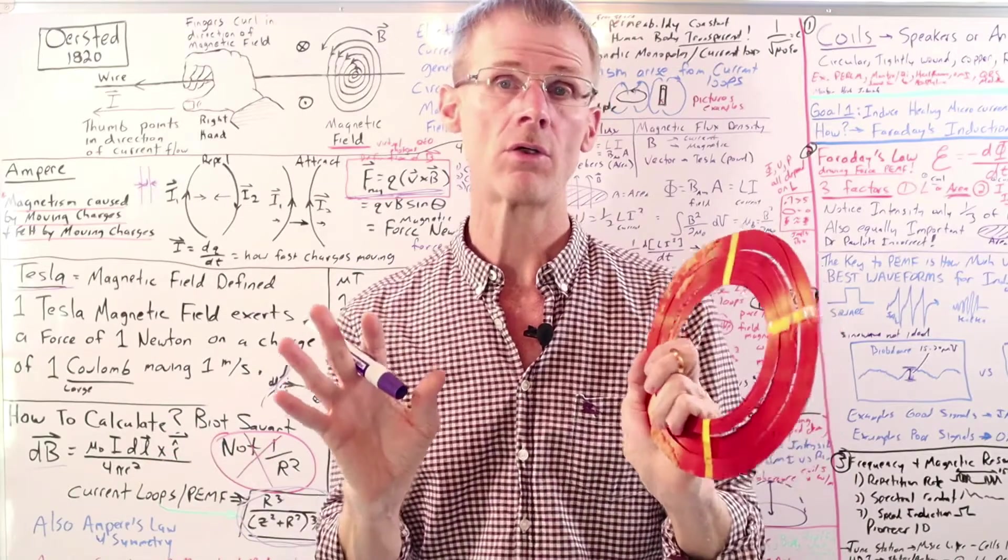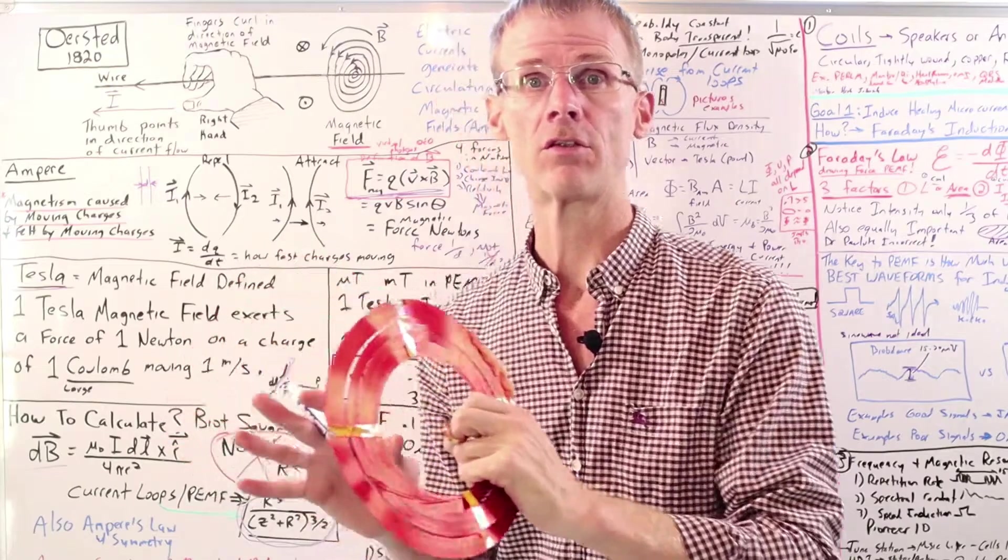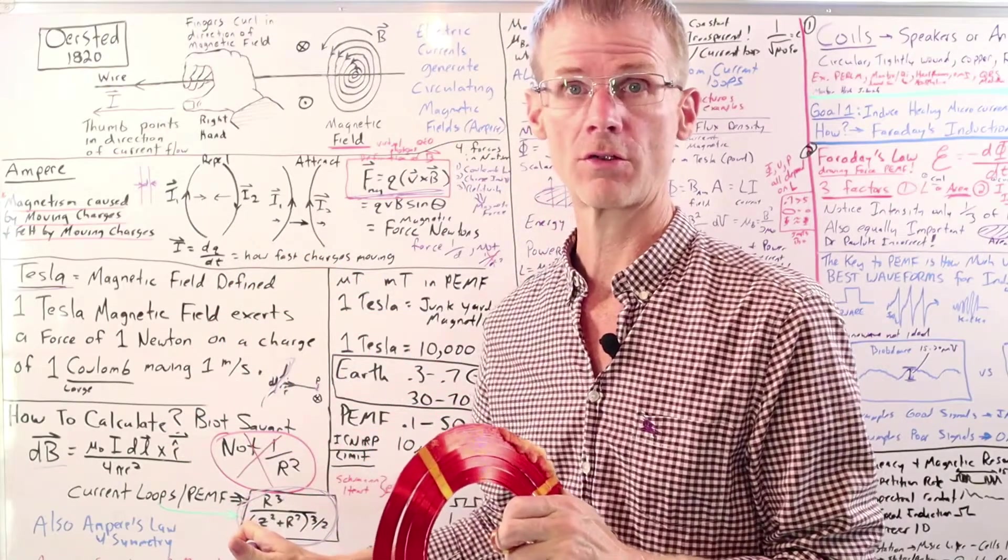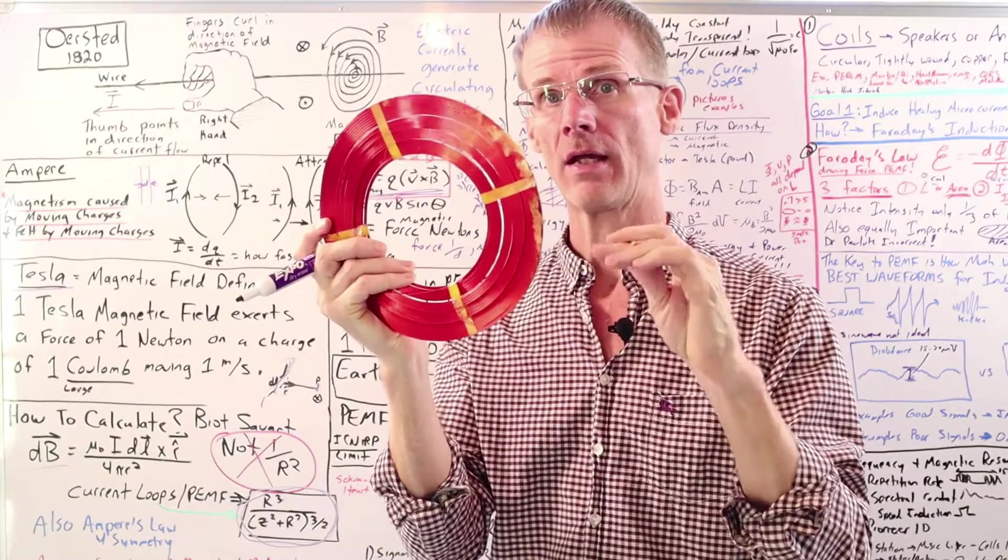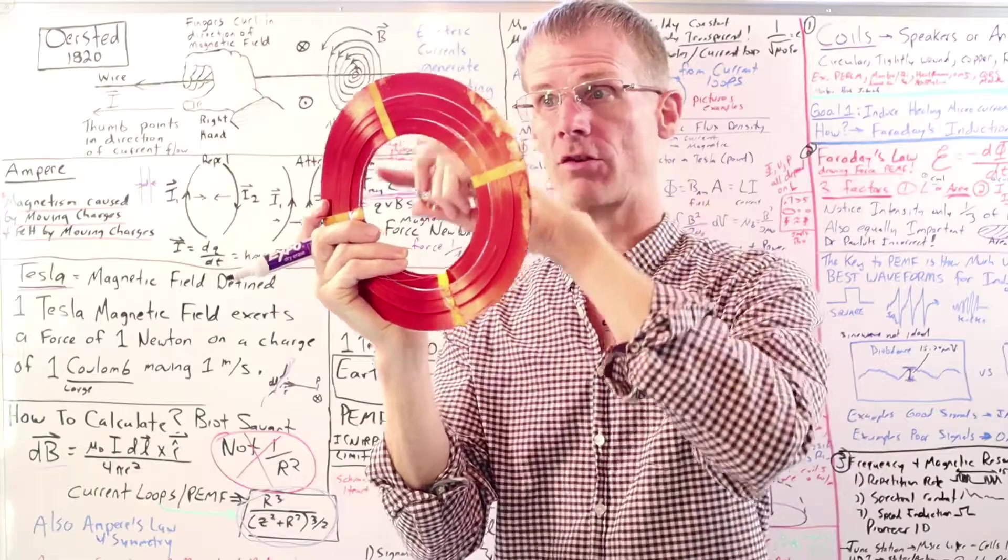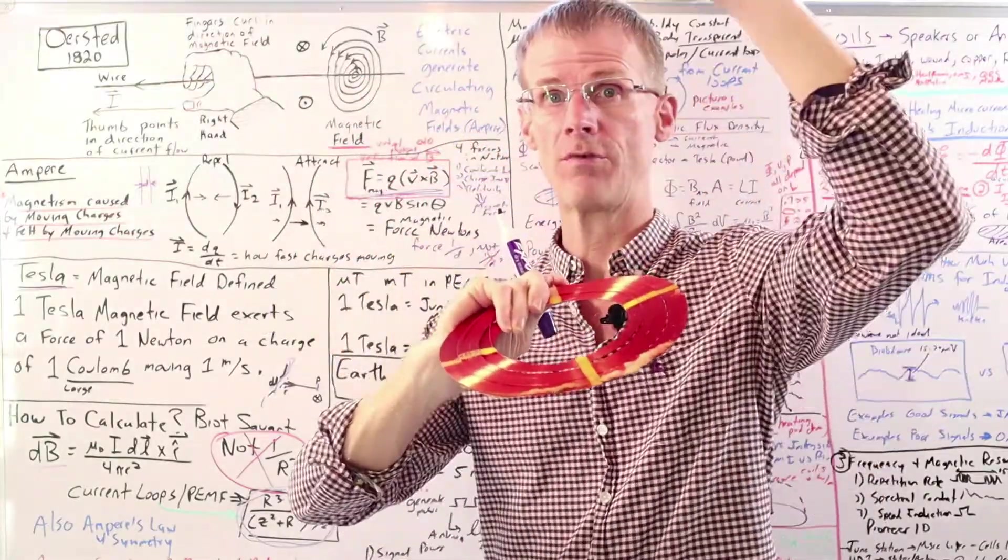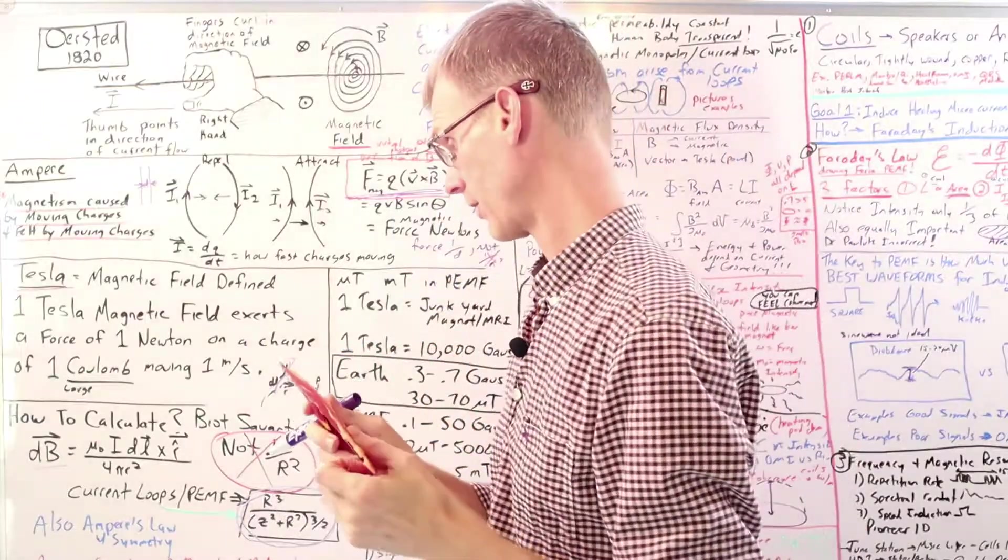So it's okay if you don't understand the Biot-Savart law. I just want to explain that a lot of so-called experts in the PEMF community will say you need a higher intensity because low intensity falls like a one over R squared. And it doesn't because again, you've got to integrate over the entire source. And a big coil is going to have more magnetism than a small coil because there's a lot more current and a lot more field strength.